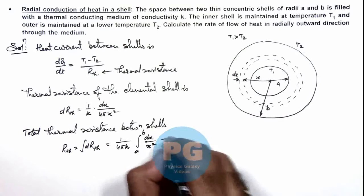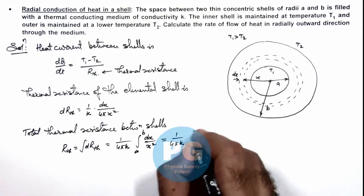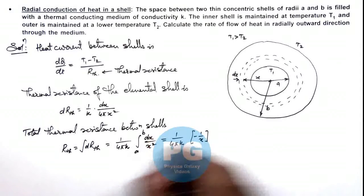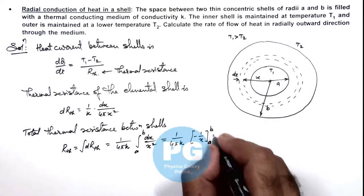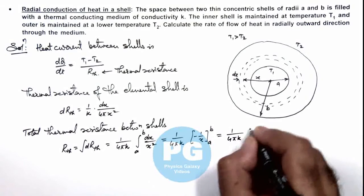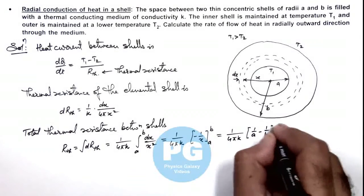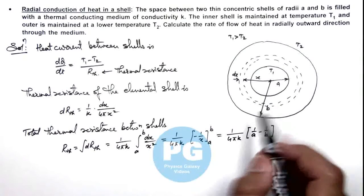And if we integrate it, this gives us 1/(4πk). This is -1/x, the integration of 1/x². We put limits from a to b. So simplifying, we are getting 1/(4πk) multiplied by (1/a - 1/b). That is the thermal resistance of the material between these two shells.